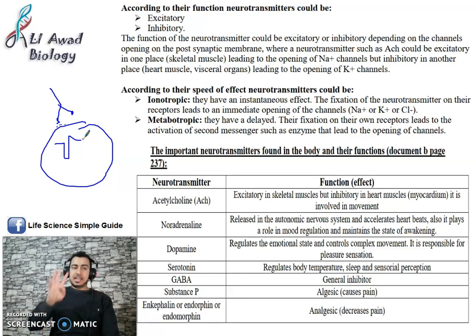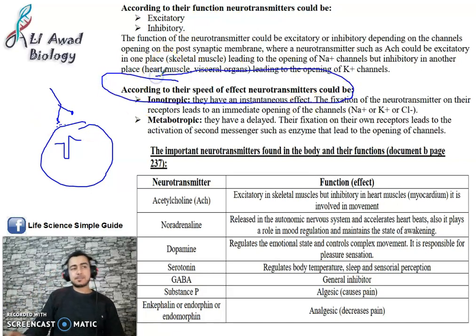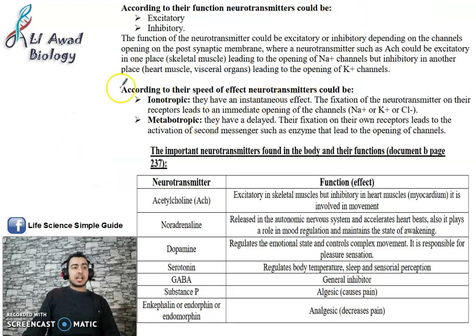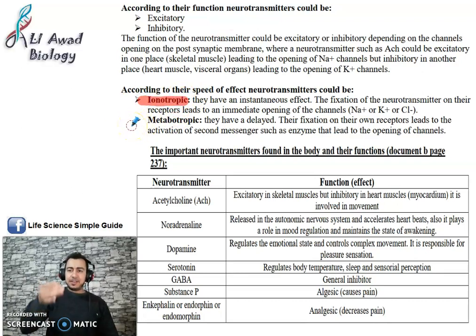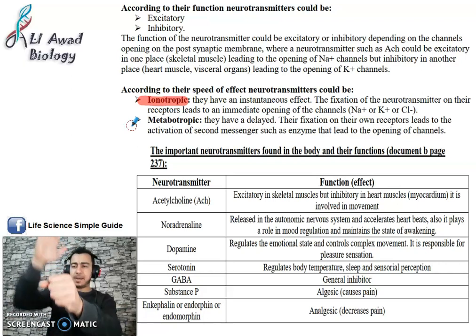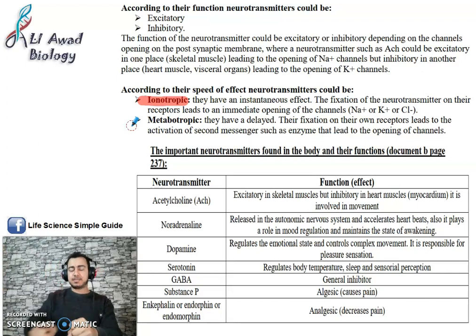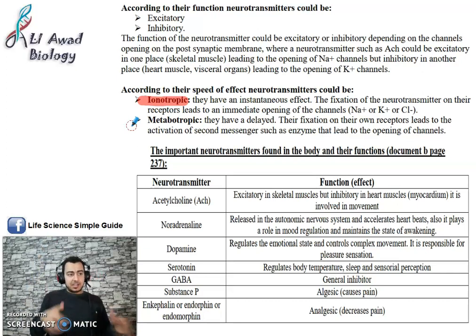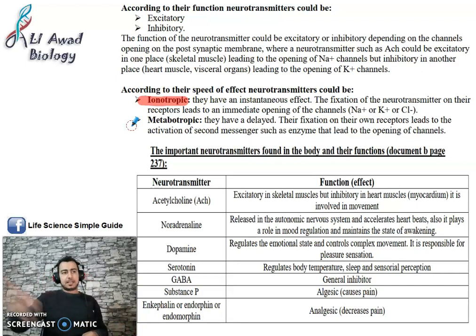So now, the last classification of neurotransmitters is according to speed. According to speed, we have two types of neurotransmitters. The first type is called ionotropic neurotransmitters — they have an instantaneous effect, meaning they work at the same moment. When they bind to their receptors, they quickly transmit the nervous message and lead to the opening of Na+, K+, or Cl− channels. These neurotransmitters like acetylcholine bind to receptors and directly open channels.